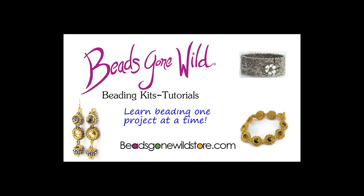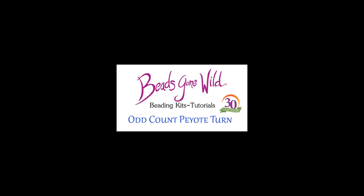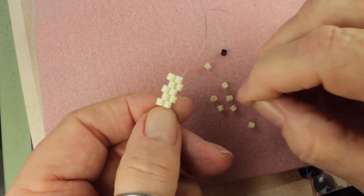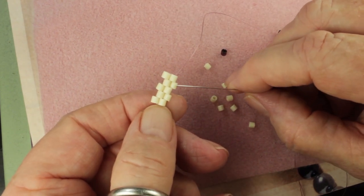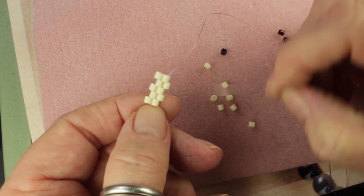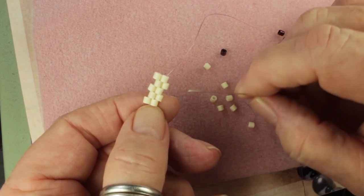Hi everyone, this is Glenda from Beads Gone Wild. I just wanted to do a quick video on how to do odd count peyote. As you can see, I have a strip here of odd count that has two up beads and three down beads. I'll go over later an easy way to start it.